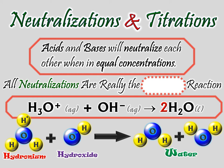All neutralizations are really the same exact reaction. Acids make hydronium by falling apart; bases, one way or another, make hydroxide. So what's a neutralization really? It's hydronium and hydroxide reacting — and they could produce two water molecules. All you have to do is swap that hydrogen ion over to the hydroxide, and you've got two water molecules.